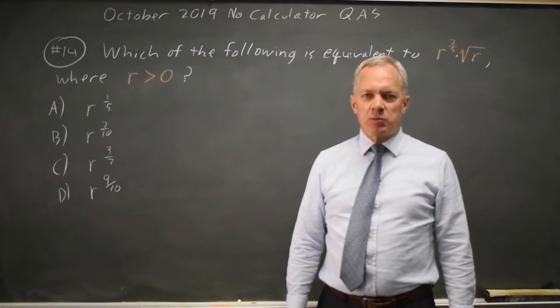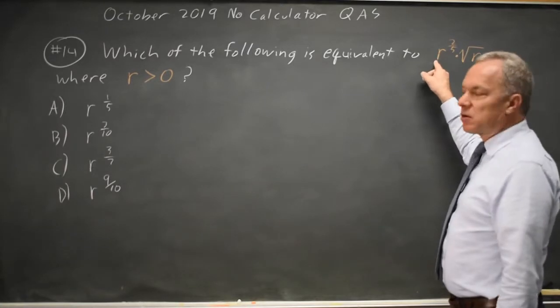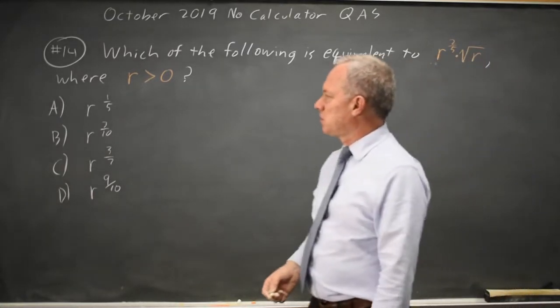This is question 14. College Board is asking us to rewrite a product of r with a rational exponent and root r where r is positive.